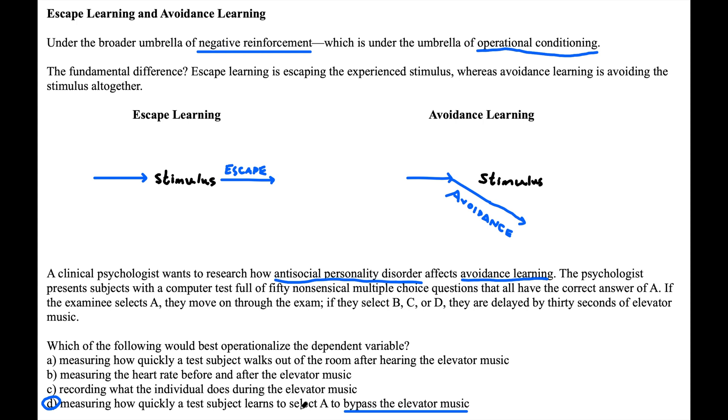Do you know what type of learning answer A is? If you answered escape learning that would be correct. This would be kind of a ridiculous example to get up and walk out of the room, but it would be an example of escape learning if you consider elevator music to be the punishment. Because you have experienced the aversive stimulus, which is elevator music, and you are walking out of the room.